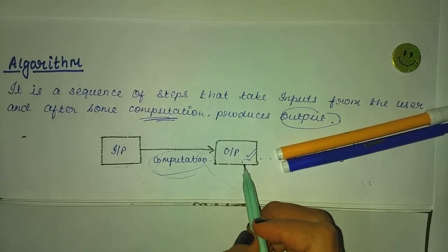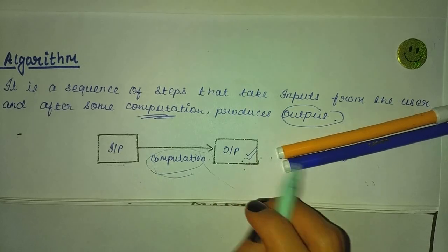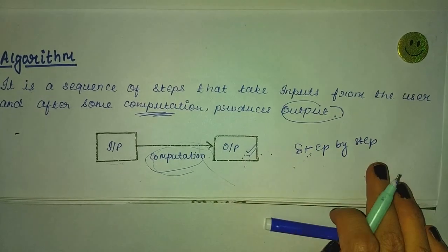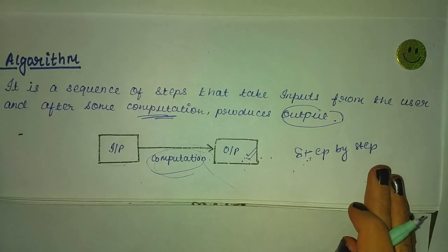So in simple words, we can define algorithm as step by step solution to any problem is known as algorithm.